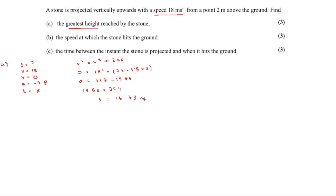But we haven't finished yet — the stone is projected from 2 metres above the ground, so the greatest height is 16.53 plus 2 equals 18.53 metres above the ground.